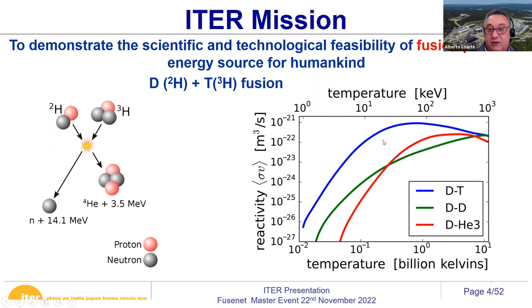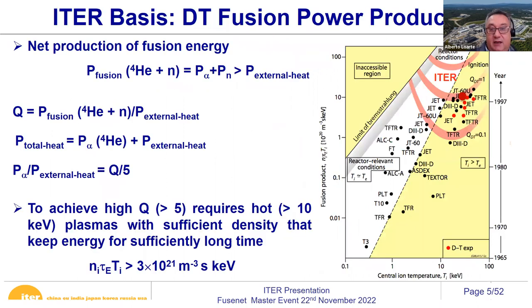To achieve fusion, we need temperatures of the order of 10 keV — that's 100 to 500 million Kelvin. The basis of fusion energy is producing high-energy helium and neutrons. The neutrons will be used in a reactor to heat up the coolant and produce electricity. The helium stays in the plasma, gives its energy to the plasma, heats it up, and in that way the plasma can self-heat. This is what we call a burning plasma.